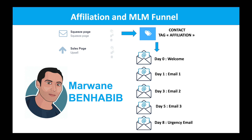Day three, same thing — he will receive another content in another email with your affiliate link, and so on. Day five, another email with another content, etc. And finally, at the end of the process, he will receive an urgency email. As you know, prospects make their decision at really the last moment, so it's very important to send this kind of urgency email.